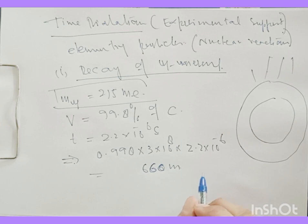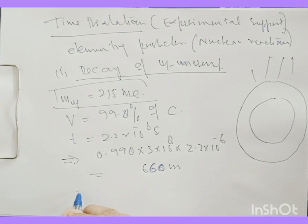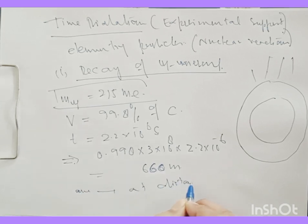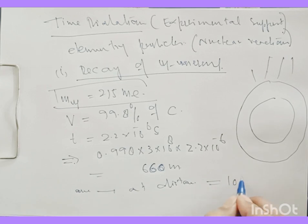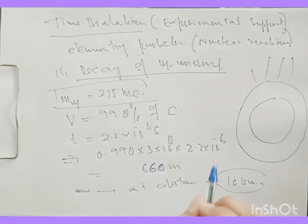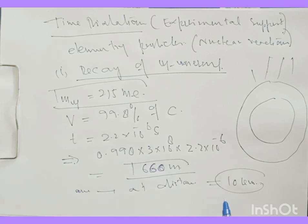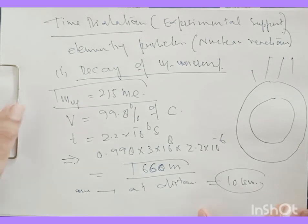But what is found is that they are detected even at a distance of 10 kilometers from their original point of journey. We can explain this — that they are found after travelling a distance of 10 kilometers — by making use of time dilation.